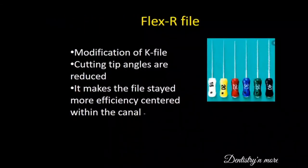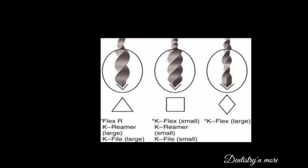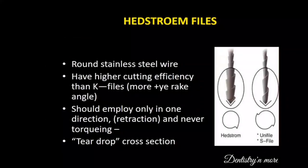Flexar files are another modification of the K-file. The cutting tip angles are reduced, which makes the file stay more efficiently centered within the canal. Smaller size K-flex and K-files have a square cross-section, larger size files have a triangular cross-section, and K-flex files have a rhomboidal cross-section.